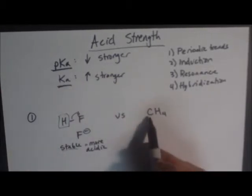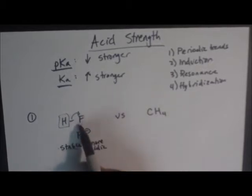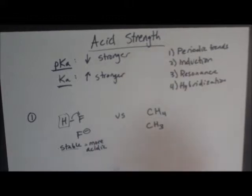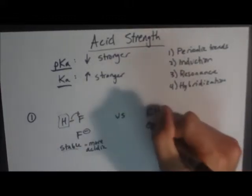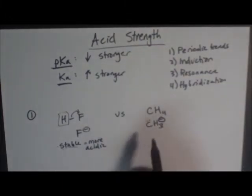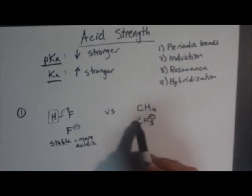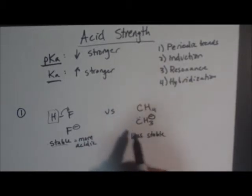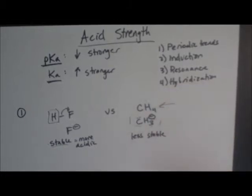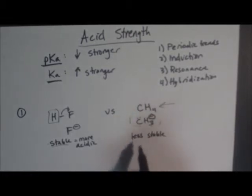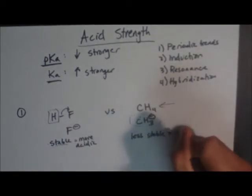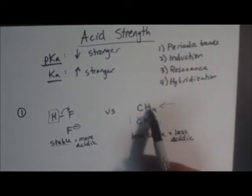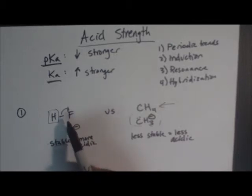Now let's look at carbon. Carbon is not as electronegative as fluorine. So when you lose a hydrogen, you're going to have a negative charge — a pair of electrons on that carbon. Carbon is not as electronegative; it's not as comfortable with this pair of electrons, making it a less stable conjugate base. This conjugate base is not going to be as stable as a more electronegative fluorine. Less stable equals less acidic. This molecule is less acidic than the fluorine molecule, even though they're both acids.